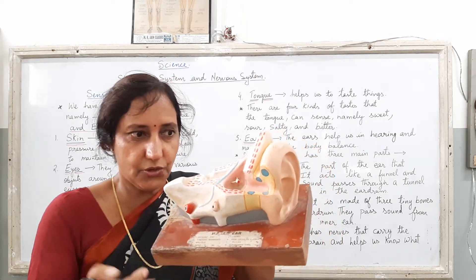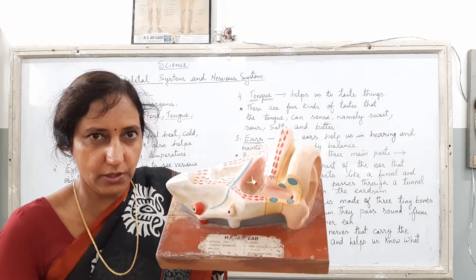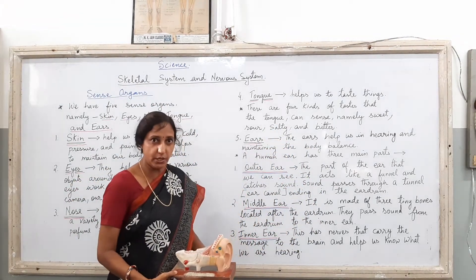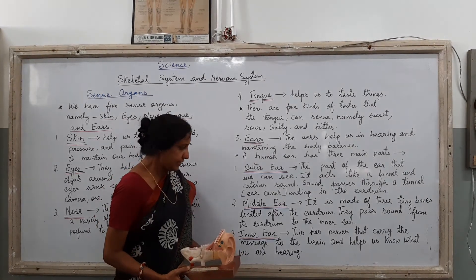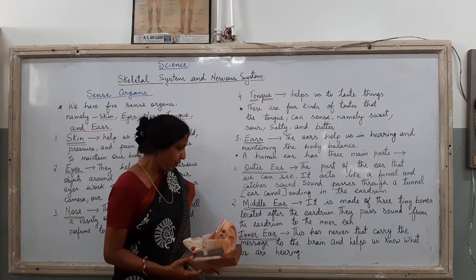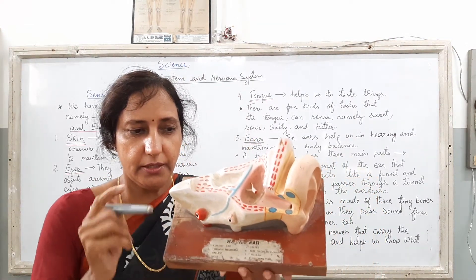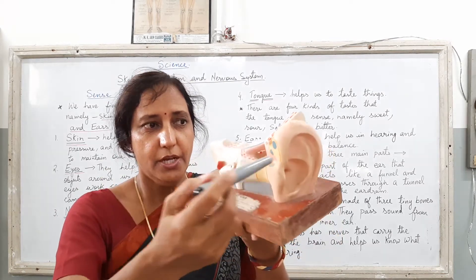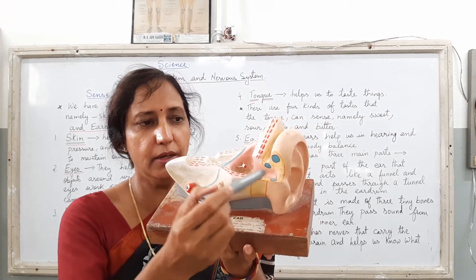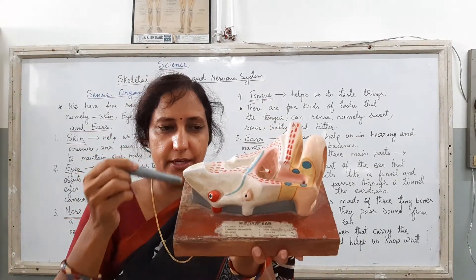The sound is entering through this canal. Now lastly, I am going to tell you about the inner ear. This has nerves that carry the message to the brain and helps us know what we are hearing. Here you can see the internal part and lastly the inner ear. So the sound is entering through the outer ear, going to the ear canal, hitting the eardrum, then the middle ear and lastly the inner ear.